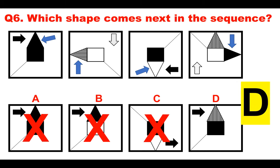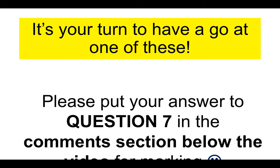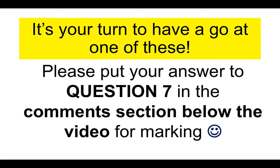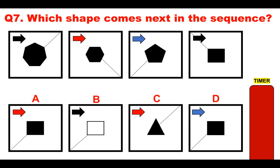If you get access to those 500 test questions, you'll become really good at abstract reasoning tests because you can practice under time conditions on the go. Now it's your turn to have a go. Please put your answer to question seven in the comments section below the video for marking. Which shape comes next in the sequence? Don't forget to look for a pattern. Is it A, B, C or D? If you get this correct, you're doing really well.